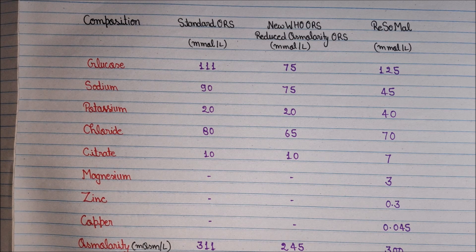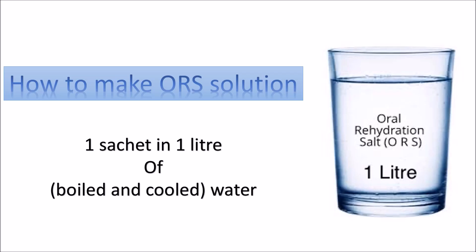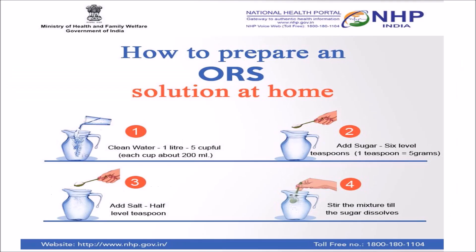The comparison table is important. The ORS packet is dissolved in one litre of boiled and cooled water, and the solution should be used within 24 hours after preparation. If you don't have WHO ORS, you can make an ORS solution at home: take one litre of clean boiled and cooled water, then add six teaspoons of sugar and half a teaspoon of salt and mix it.